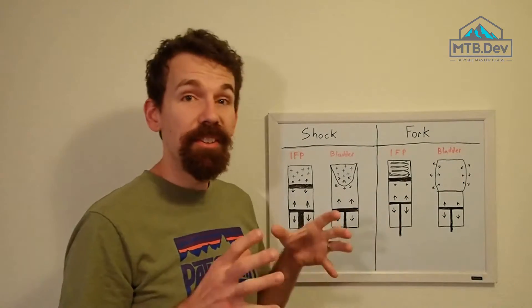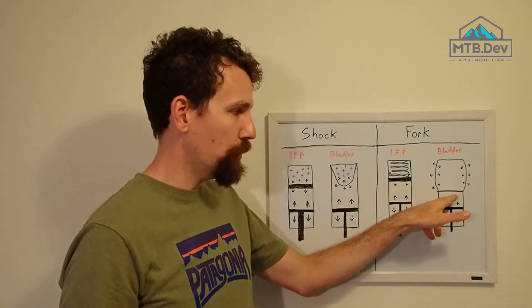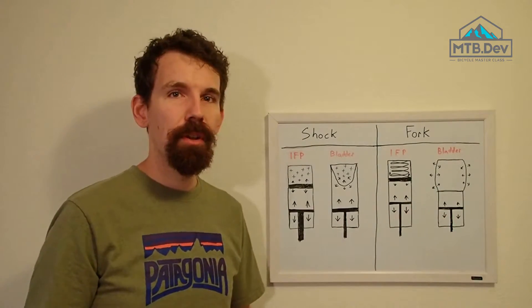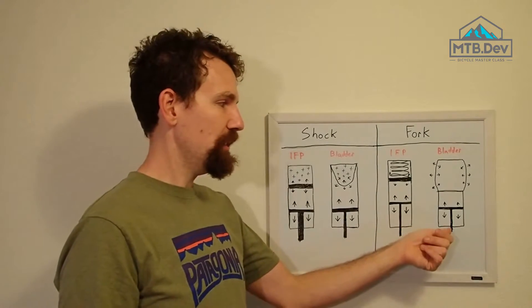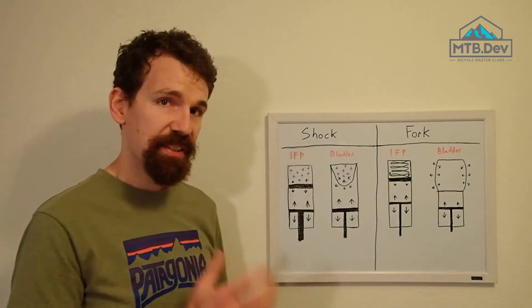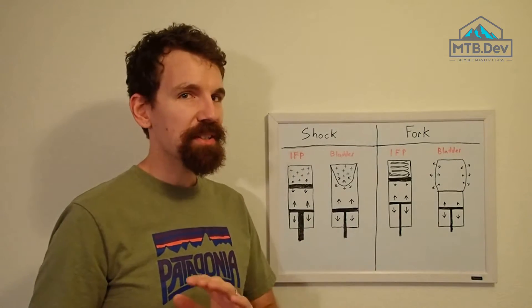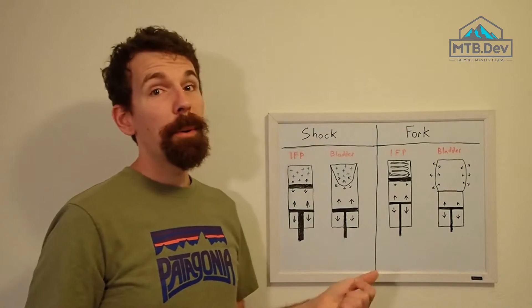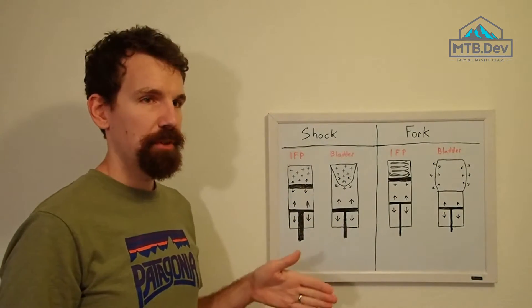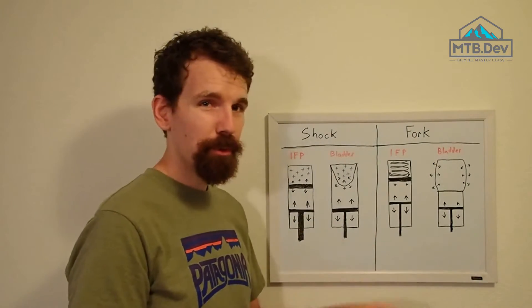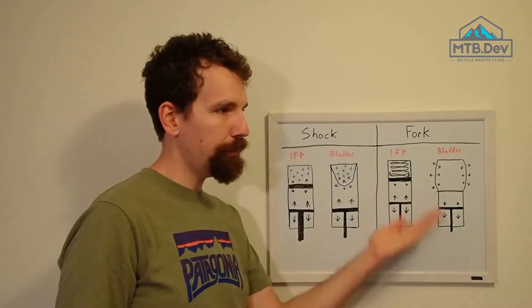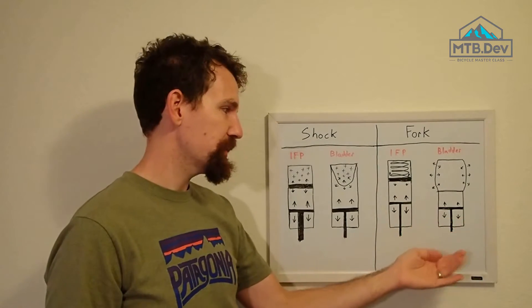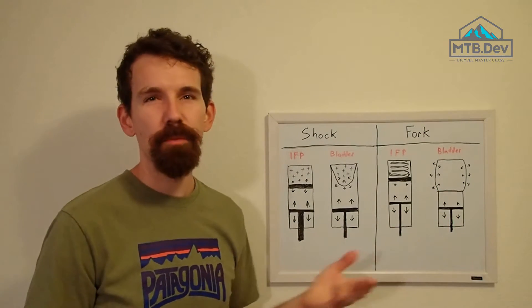Now with that, that does reduce the preload on the oil, the system pressure on the oil, which can increase the risk of cavitation if there's a large, fast input. However, these are much less likely on a fork, not only because you have less weight up there, but because there's no mechanical advantage in a fork. Telescoping forks are a one-to-one system, so the movement, the input, is going to move the wheel one inch and the damper piston one inch.